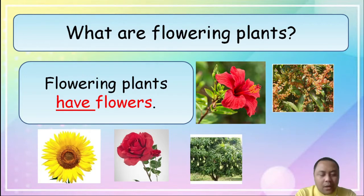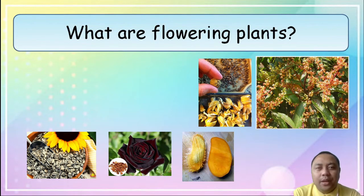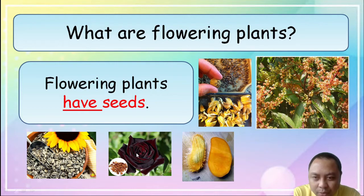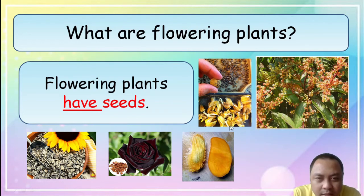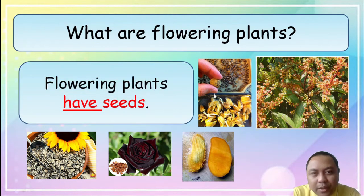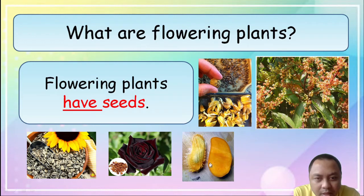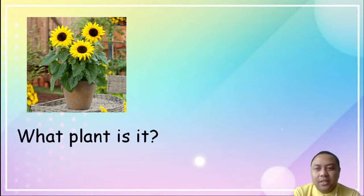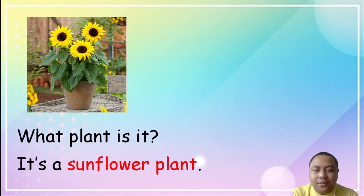Flowering plants also have seeds. In this picture, the sunflower also has seeds. This rose plant also has seeds. This hibiscus plant also has a seed. And this mango tree has fruit and also seeds. As you can see in the picture — what plant is it? It's a sunflower again.